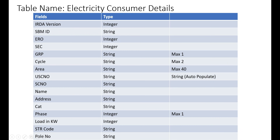Now let's move to the requirements. First of all I need some tables. The first table name is 'Electricity Consumer Details'. For example, I am the owner of my house — I am a consumer — so my electricity details, my meter number, and everything will be stored in my nearby electricity department area. That is the reason we first need to create the Electricity Consumer Details table.